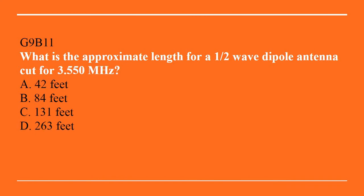G9B11: What is the approximate length of a half-wave dipole antenna cut for 3.550 MHz? A. 42 feet. B. 84 feet. C. 131 feet. Or D. 263 feet. The correct answer is C, 131 feet.